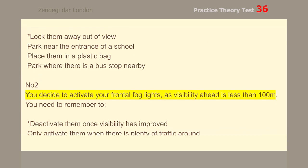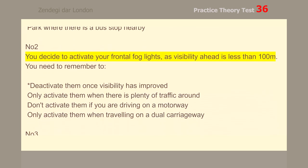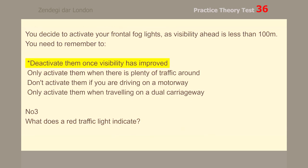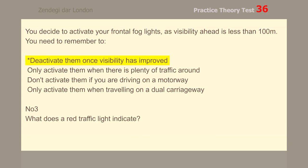Number 2. You decide to activate your frontal fog lights as visibility ahead is less than 100 meters. You need to remember to deactivate them once visibility has improved.